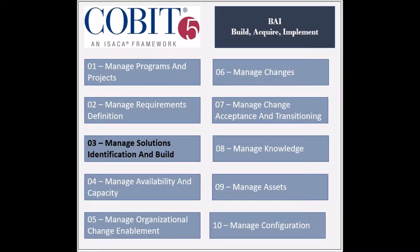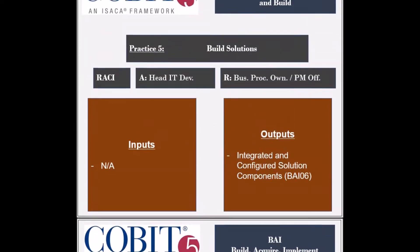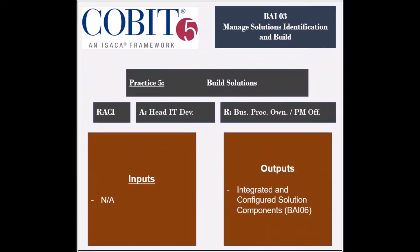The third process of the Build, Acquire, and Implement domain, called Manage Solutions Identification and Build, has 11 practices. The fifth practice is to build solutions. From a RACI chart perspective, the entities that are responsible are the business process owners and the project management office.